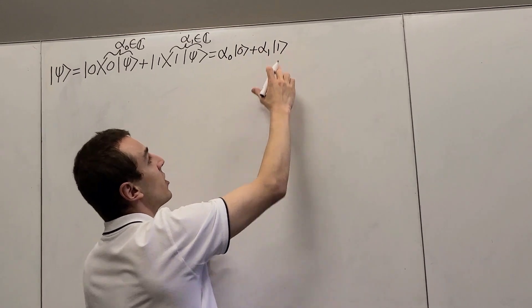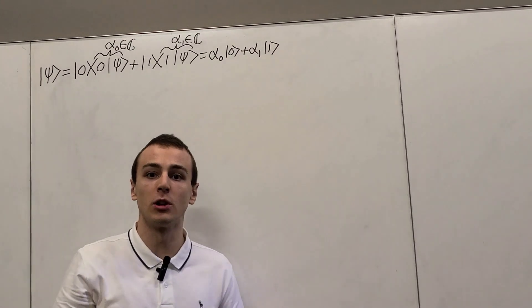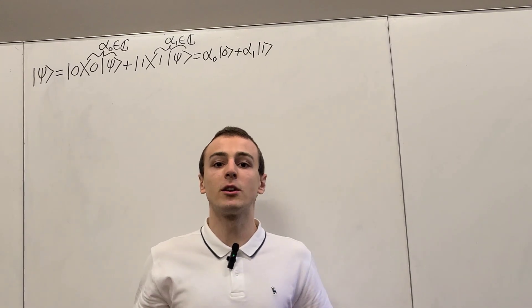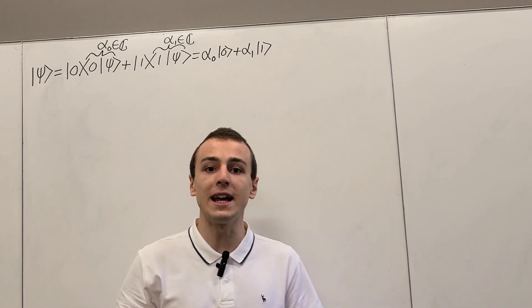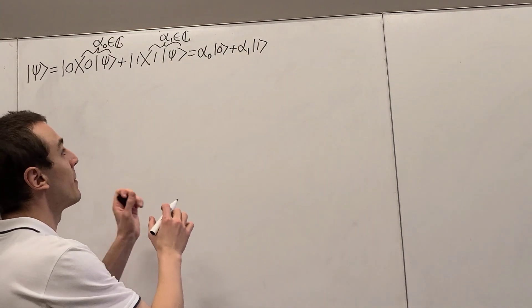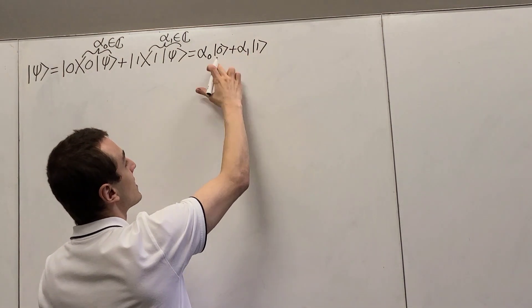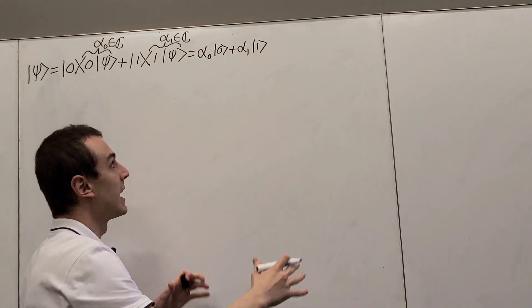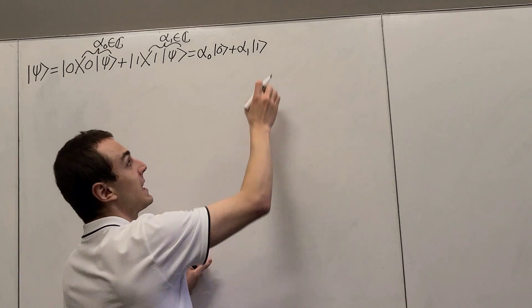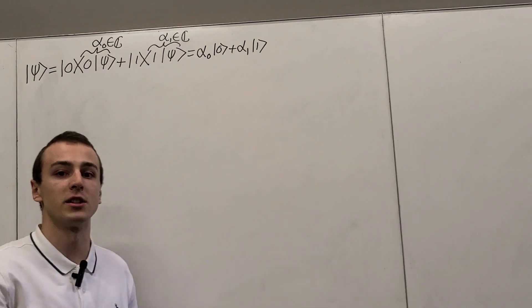These two states form a basis for a two-dimensional Hilbert space. It's a two-dimensional Hilbert space because we're describing a qubit, and a qubit is described by this two-dimensional Hilbert space, so we only need two basis vectors. In general, if you have higher-dimensional Hilbert spaces, you're going to need more basis vectors to span the entire space.